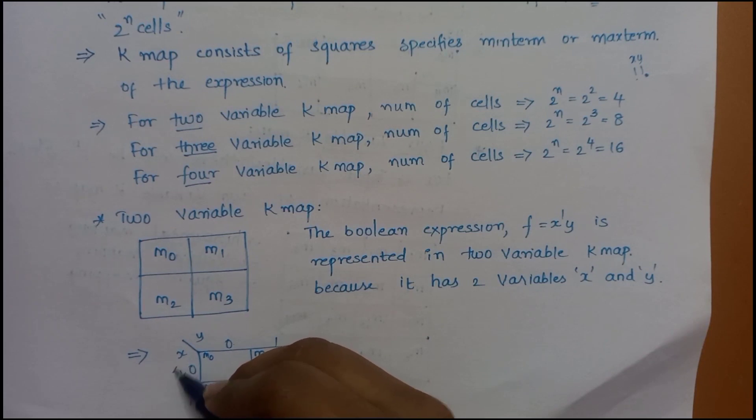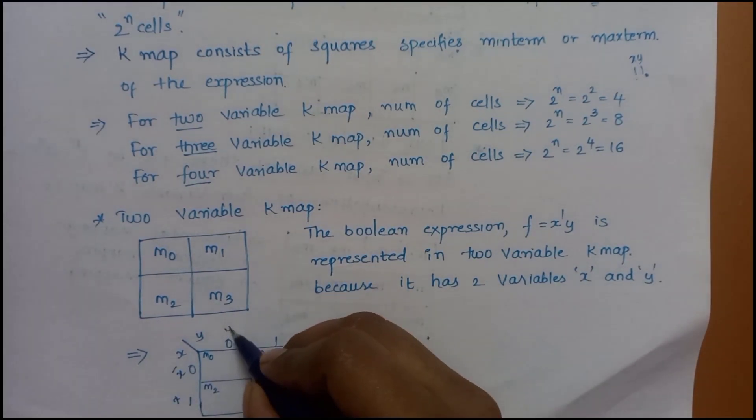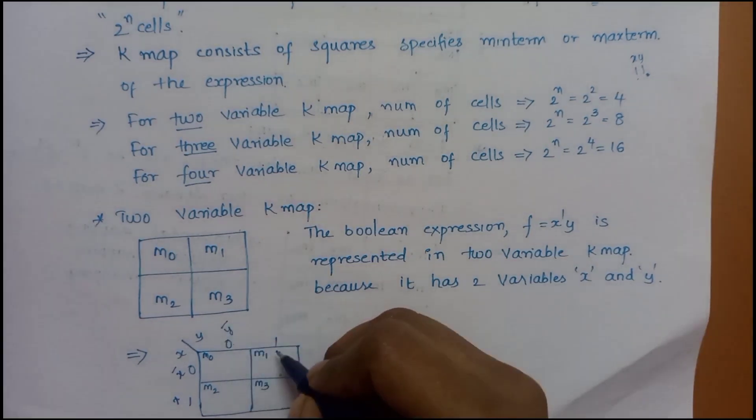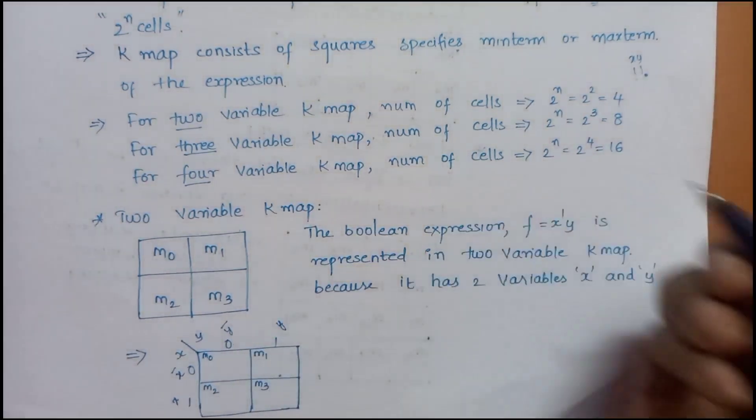In the K-map layout: 0 represents x-dash, 1 represents x, 0 represents y-dash, and 1 represents y.